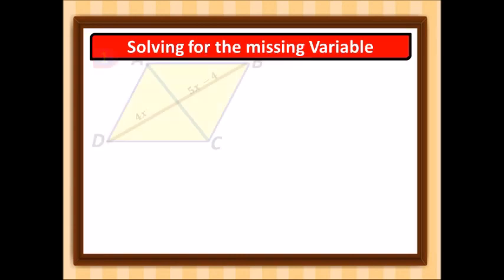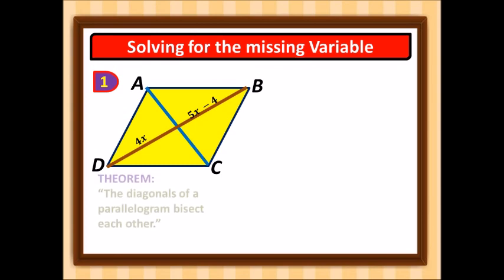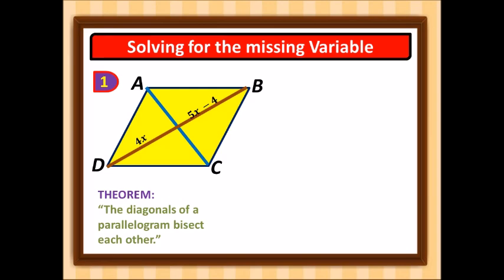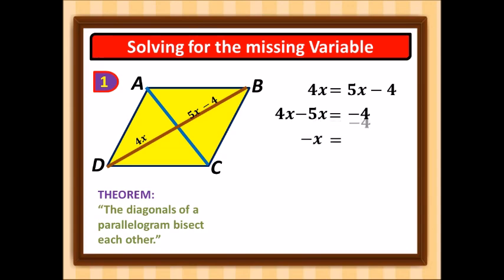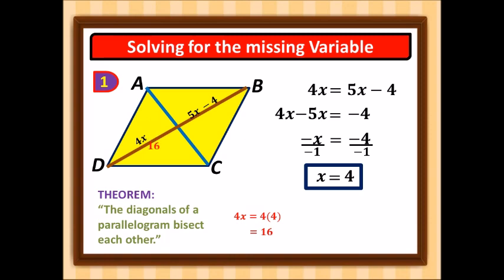Now let's solve for the missing variable. In parallelogram ABCD, the diagonals bisect each other, so 4x equals 5x minus 4. Solving: 4x minus 5x equals negative 4, giving negative x equals negative 4, so x equals 4. Substituting: 4 times 4 equals 16.